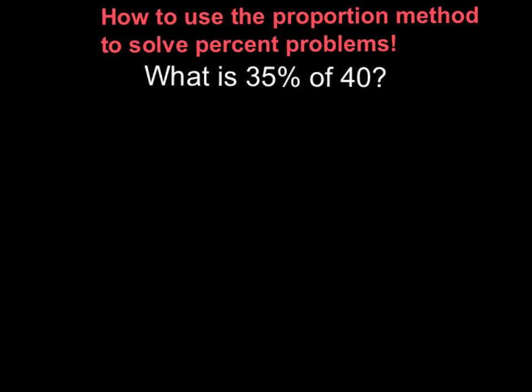So now let's take a look at an actual problem. What is 35% of 40? Alright, so let's think about this. The first step we always want to do is we want to write that percent proportion down. Is over of equals percent over 100. Once we have our percent proportion written down, now we want to replace the word is or the word of or the percent symbol with actual numbers that are needed to solve the problem.